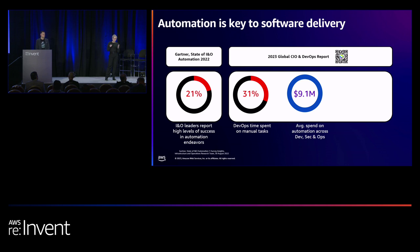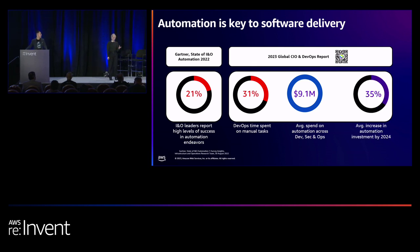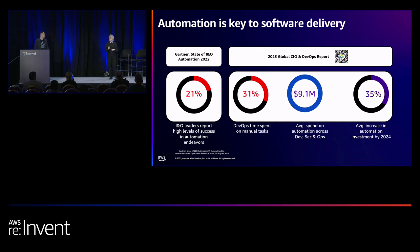All is not doom and gloom. The average spend on automation that Gartner sees within their customers is $9 million — a significant number. But that investment does actually drive savings. So even as we look at where organizations are along this journey, there is hope. It's also a journey, and we'll talk about that as we get into the maturity model.